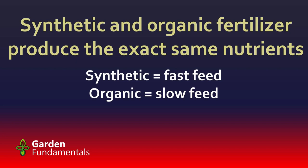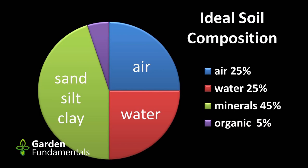Synthetic and organic fertilizers produce the exact same nutrients, but there are some very significant differences. Synthetic fertilizer is a fast feed — as soon as water hits that fertilizer, those nutrients break apart and are available for plants, and they move through the soil profile quite quickly. Organic fertilizer, on the other hand, is a slow feed. Remember, it takes five years for all those nutrients to come out, and this is a very significant difference.